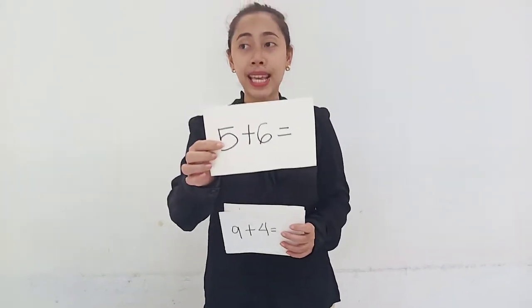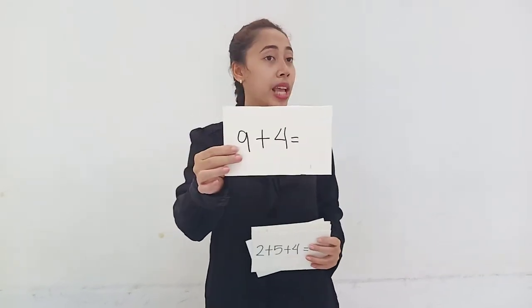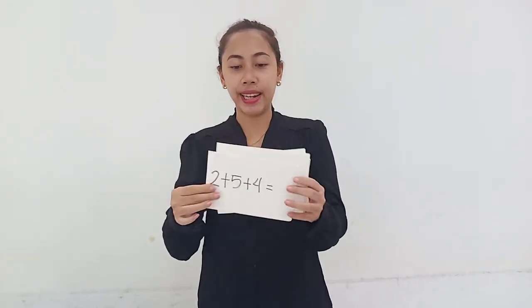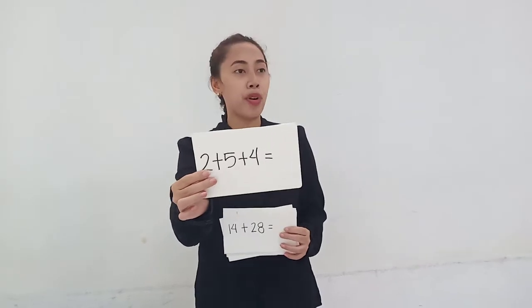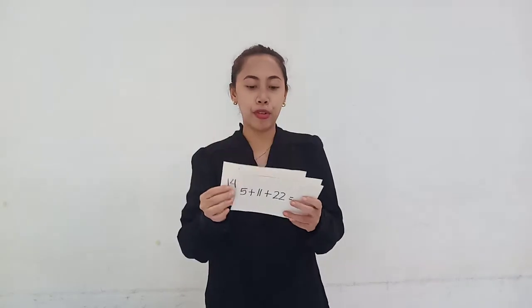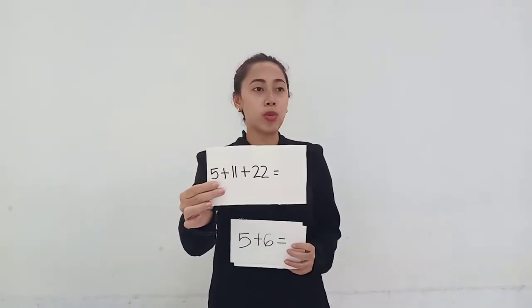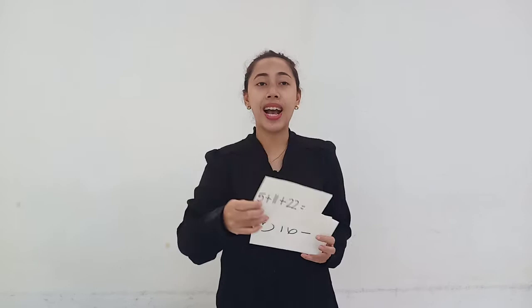5 plus 6 — 11. 9 plus 4 — 13. 2 plus 5 plus 4 — 11. 40 plus 28 — 42. 5 plus 11 plus 22 — very good, the answer is 38. I must say that your addition skills are all improving.